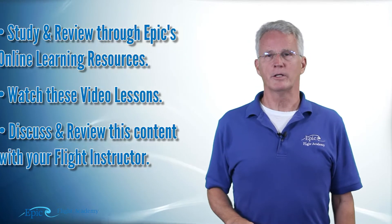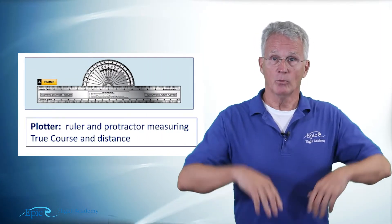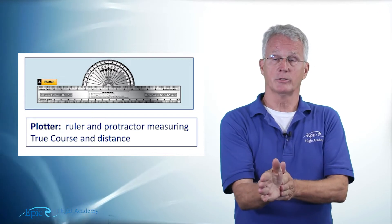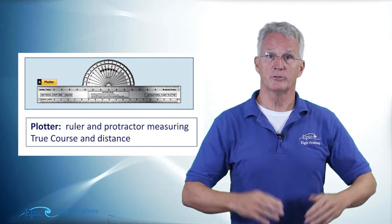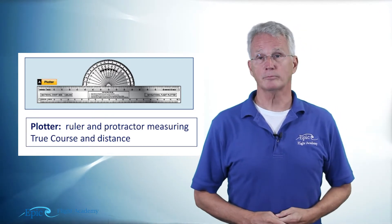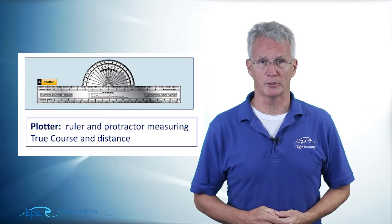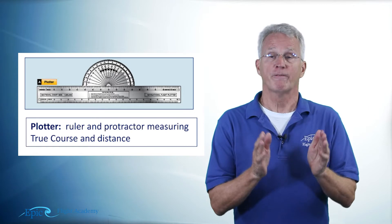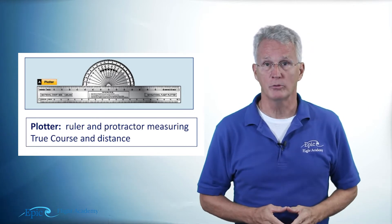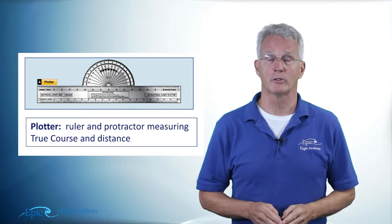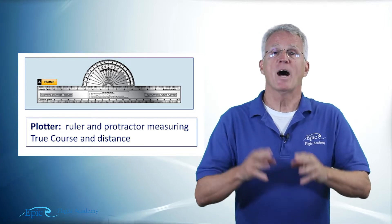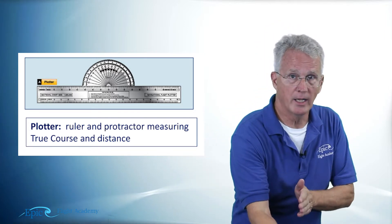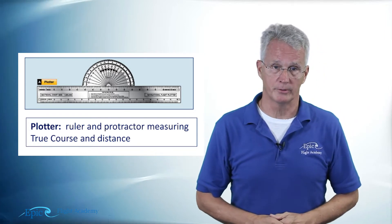Remember in an earlier video, we talked about some of the tools for flight planning? We're going to take our plotter and lay it down on our sectional chart — and your flight instructor is going to work with you on this — and we are going to measure a true course from New Smyrna Beach, Florida to Charleston, South Carolina by referencing the lines of longitude.